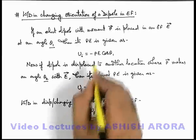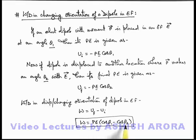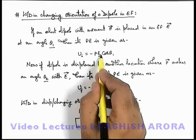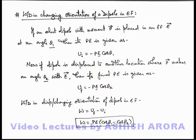Here we are not changing the magnitude of the electric field — that means in a uniform electric field we are changing its orientation from theta 1 to theta 2. Even if the electric field is varying, we can use values E1 and E2, and in a similar manner we can calculate the work done.